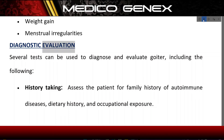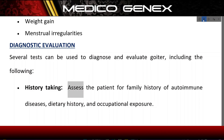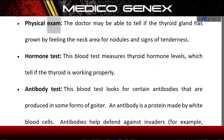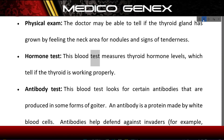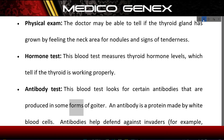Diagnostic Evaluation. Several tests can be used to diagnose and evaluate goiter, including: History taking — assessing the patient for family history of autoimmune diseases, dietary history, and occupational exposure. Physical exam — the doctor may be able to tell if the thyroid gland has grown by feeling the neck area for nodules and signs of tenderness. Hormone test — this blood test measures thyroid hormone levels, which tell if the thyroid is working properly. Antibody test — this blood test looks for certain antibodies that are produced in some forms of goiter.